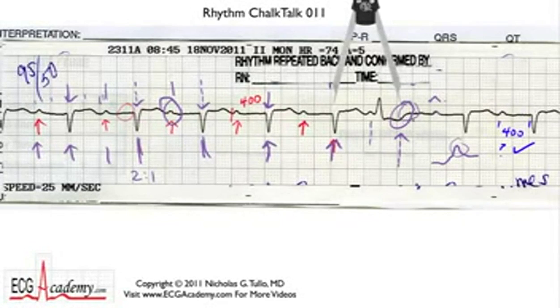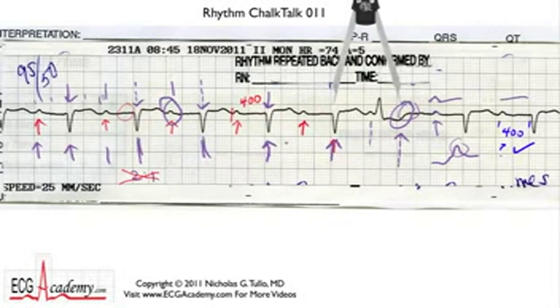So I think we've proven that these are the only P waves — we just have sinus rhythm with first-degree AV block. The idea that this was two-to-one conduction has now been disproven. I think this was kind of a neat tracing, don't you?